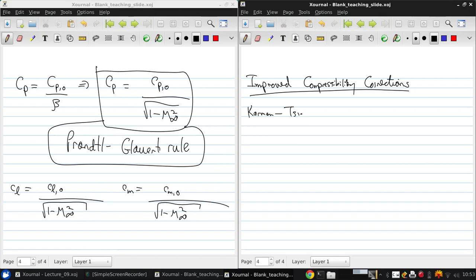There are two, there's the Carman-Sien rule where CP equals CP0 over square root of 1 minus M infinity squared plus M infinity squared divided by 1 plus the square root of 1 minus M infinity squared all times CP0 over 2.